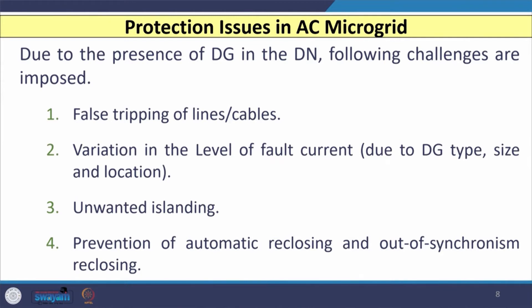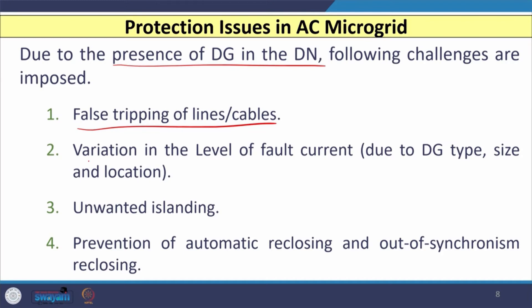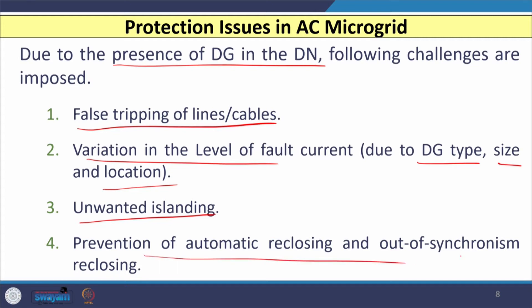Because of the presence of distributed energy resources in the distribution network, the following challenges are faced by AC microgrid: first, false tripping of lines or cables — if a fault is in line 2, line 1 or line 3 may trip unnecessarily; second, variation in the level of fault current magnitude due to the type, size, and location of the DG; third, unwanted islanding; and fourth, prevention of automatic reclosing and out-of-synchronism reclosing.